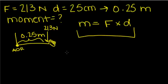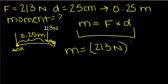So a 213 newton force acting 0.25 meters away from an axis of rotation causes a moment by this equation. We're going to plug in the information that we have.